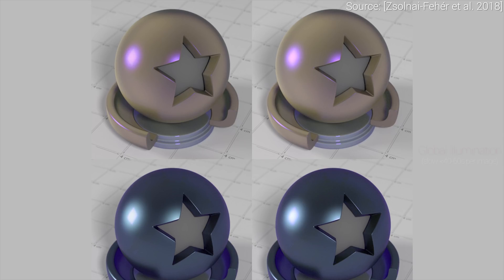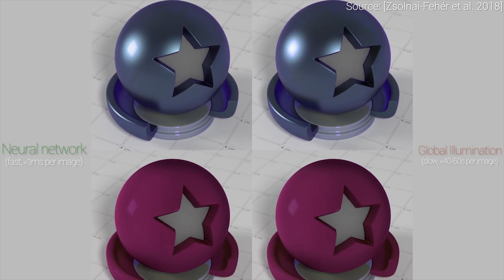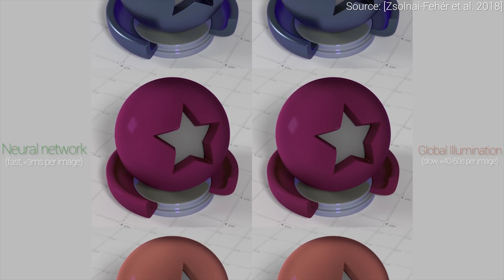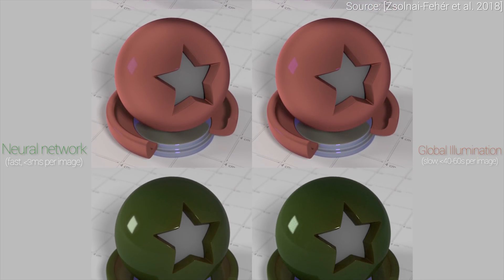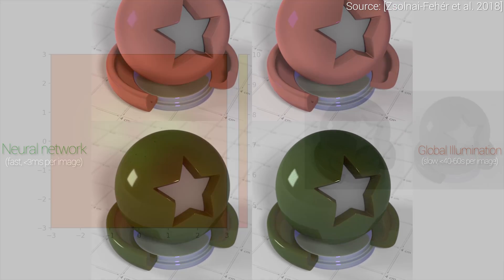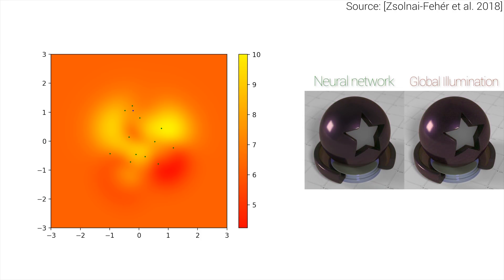Here comes learning algorithm number two to the rescue: a neural network that replaces this light simulation program and creates photorealistic visualizations. It is so fast, it not only does this in real-time, but it is more than 10 times faster than real-time. We call this a neural renderer. So we have a lot of material recommendations, and they are all photorealistic and can be visualized in real-time.